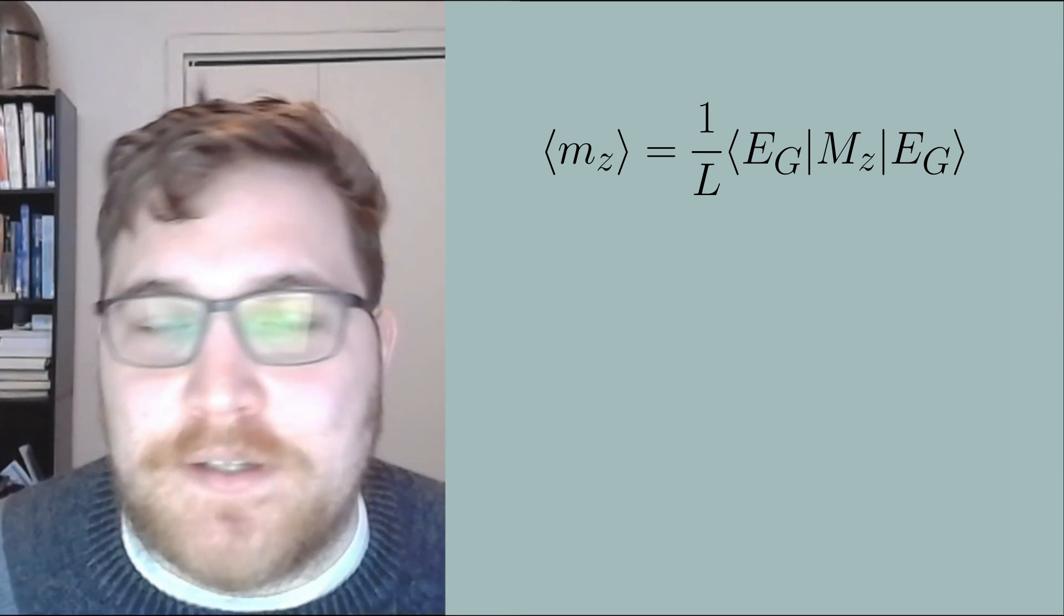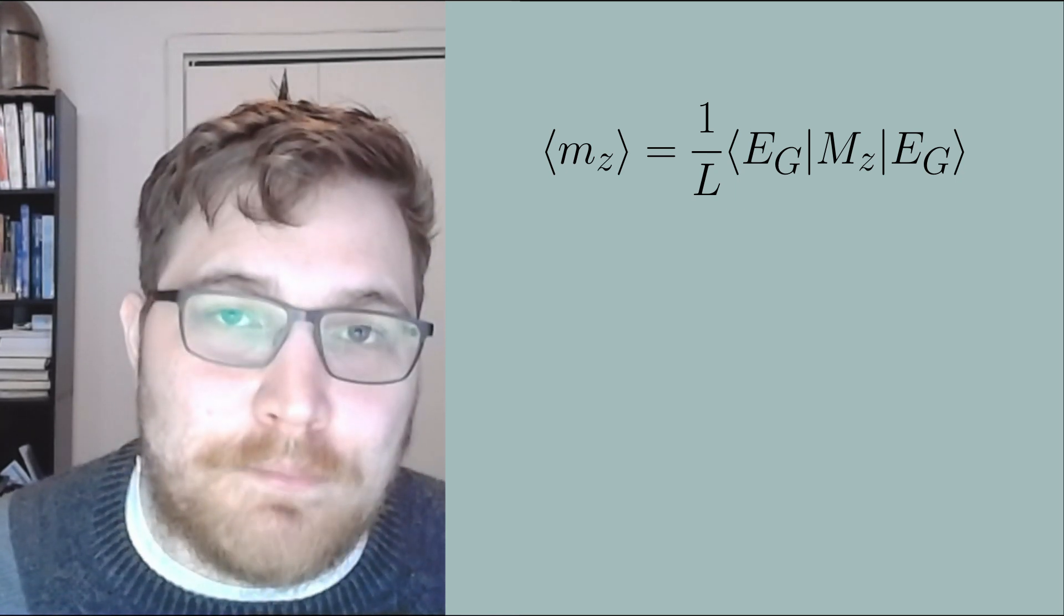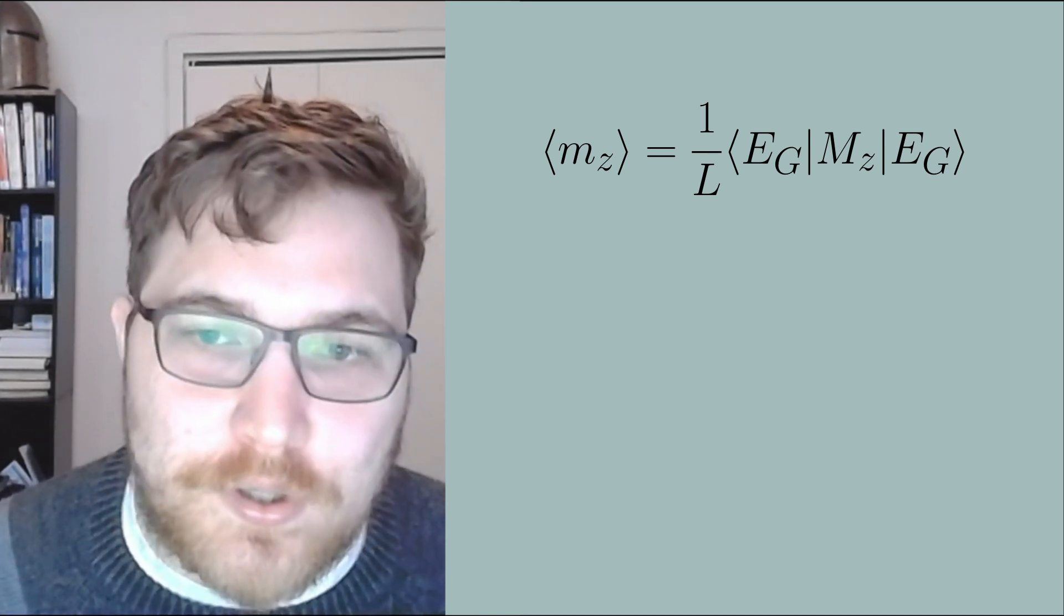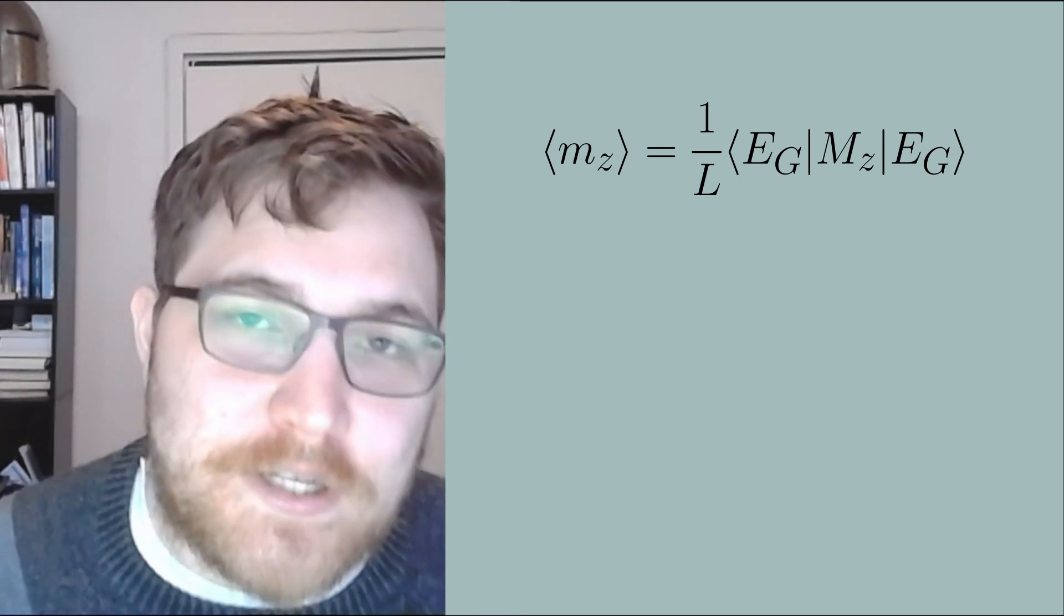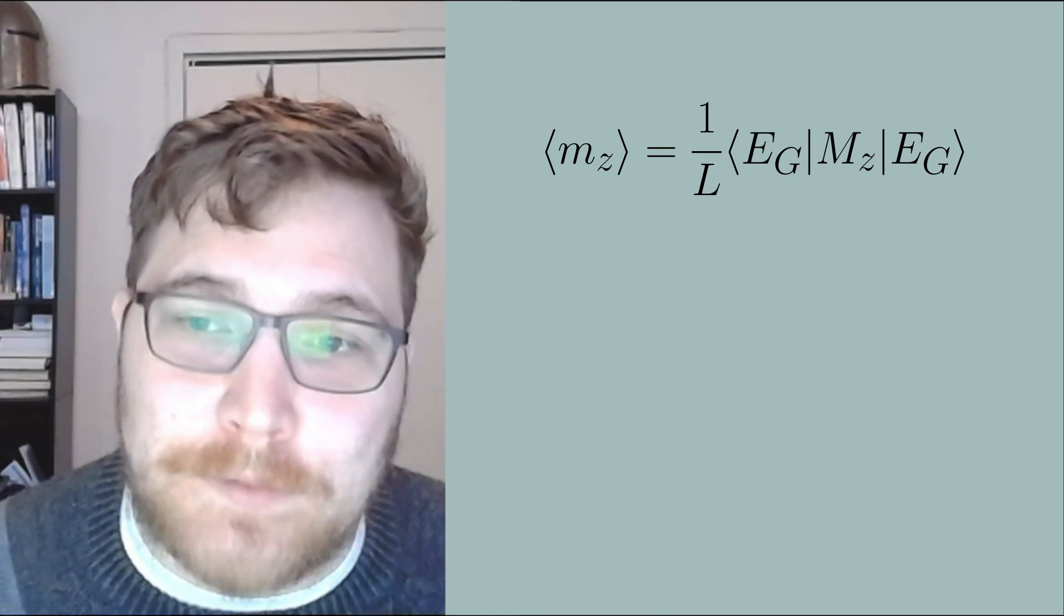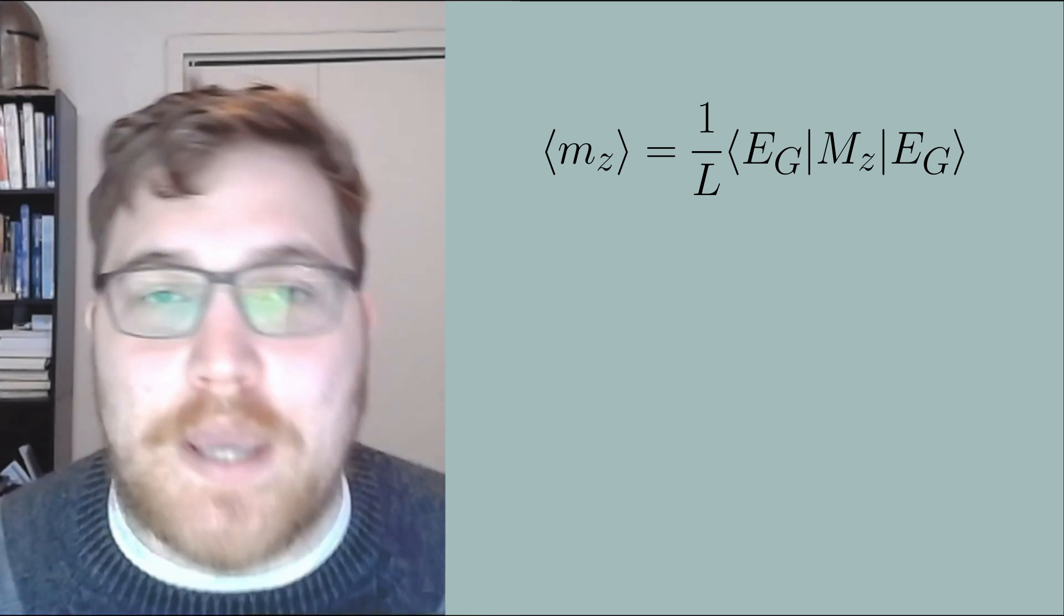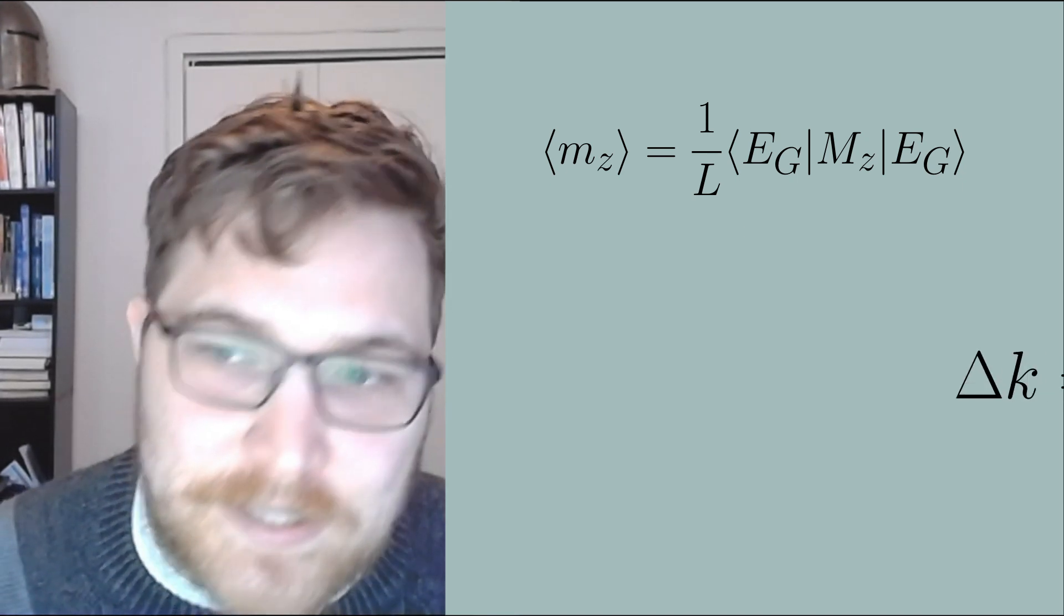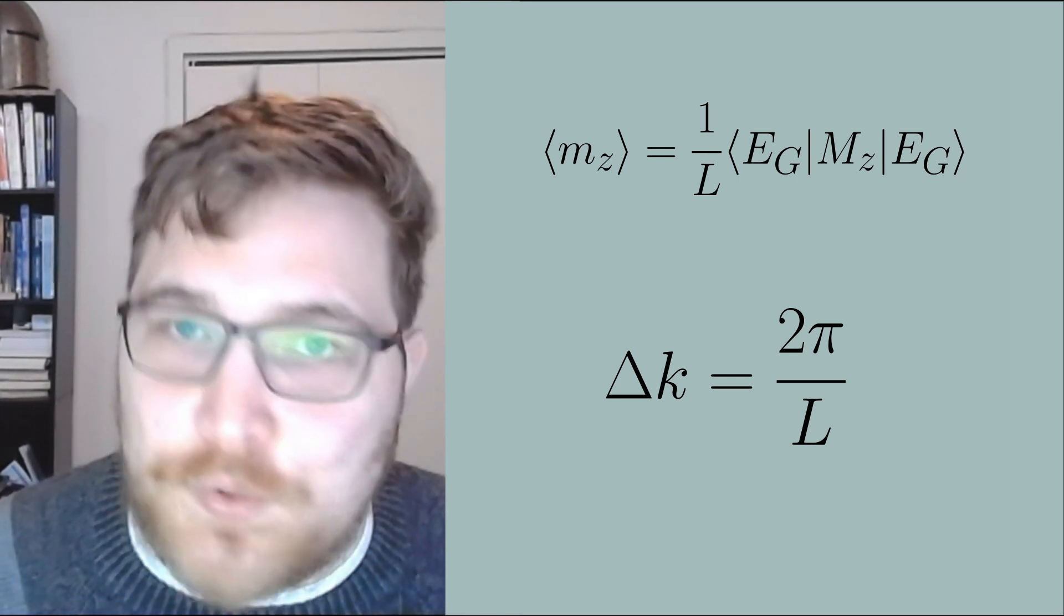Now let's introduce a standard trick you see in condensed matter physics all the time. We will approximate the sums by integrals. We can do this because the momenta k get closer as we increase the system size, and what we're really interested in is the thermodynamic limit so L is going to get extremely big. To see why this happens, you can write down the difference between neighboring momenta: delta k equals 2 pi divided by L. So as L gets big this number gets really small.